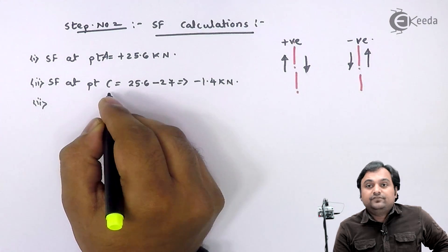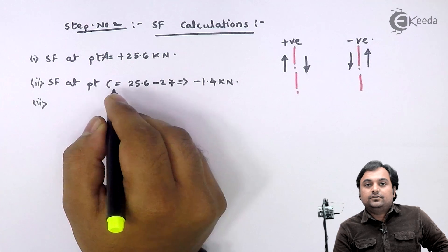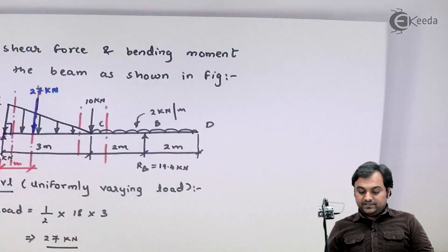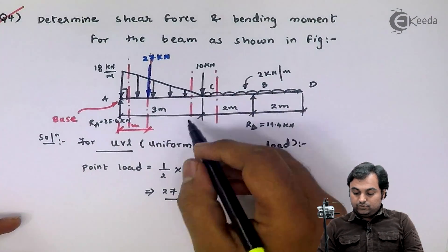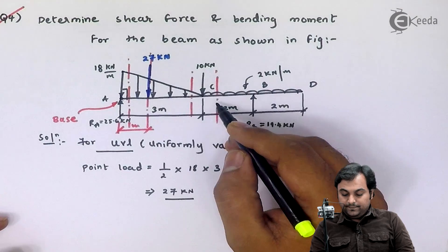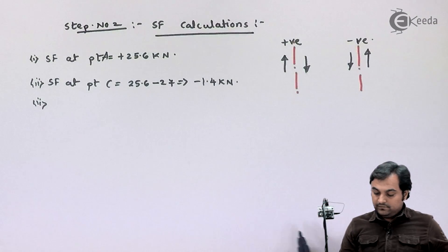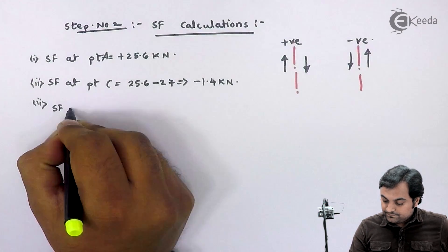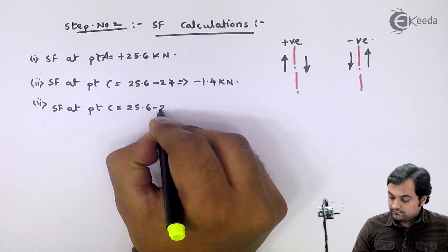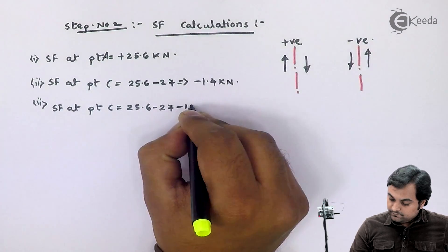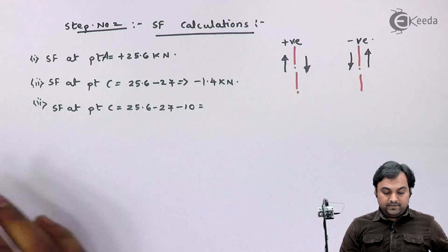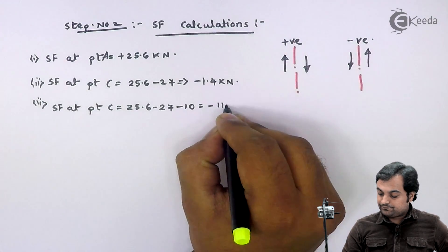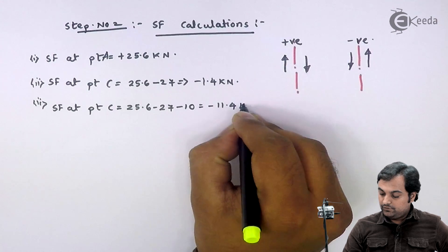Now taking the section to the right of C, the shear force value comes out to be minus 11.4 kilonewton.